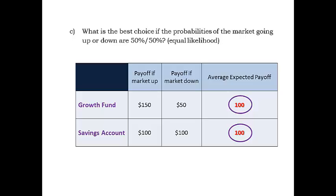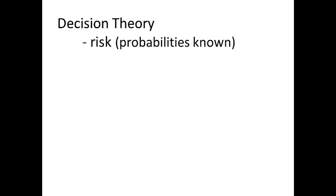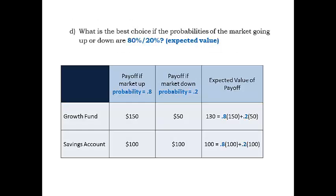Note that we made an assumption of equal probabilities for market conditions arbitrarily without considering the market's history. If we learn something about the market's history and measure the probabilities of the market going up or down, the situation is labeled risky, whereas the previous situation with unknown probabilities was labeled uncertain. For the risky situation, with known probabilities for the chance events, weighted average payoffs can be computed for each decision alternative, where the probabilities are the weights.